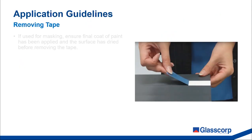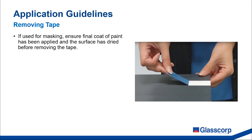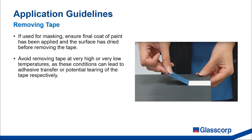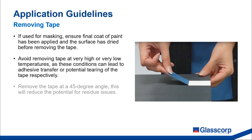In certain instances tape will be applied for a temporary application such as masking or to offer temporary protection to a substrate. There are guidelines that should be followed when it comes time to remove the tape. Firstly, if using the tape in a masking application, ensure that the final coat of paint has been applied and the surface is dried before attempting to remove the tape. Similarly, if removing a protection film, ensure all relevant works have been completed before removing the tape. Consider the air temperature when removing tape — avoiding very low or very high temperatures. Removing tapes when the ambient temperature is very high can increase the risk of adhesive transfer, while at very cold temperatures the tape may become more susceptible to tearing. It's generally recommended to remove tape at a 45-degree to 90-degree angle.